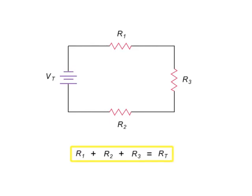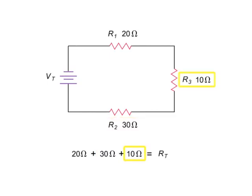So, if R1 has a resistance of 20 ohms, R2 a resistance of 30 ohms, and R3 a resistance of 10 ohms, the total resistance of the circuit is 60 ohms.